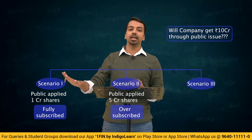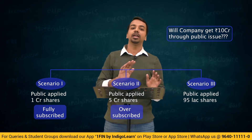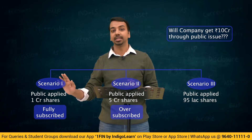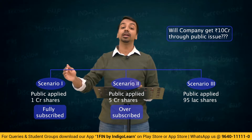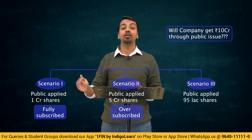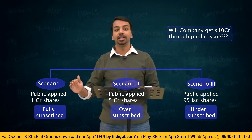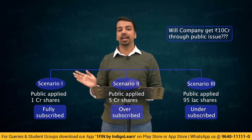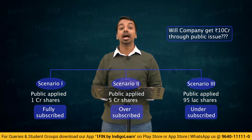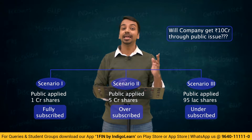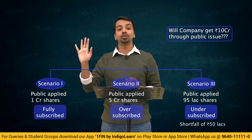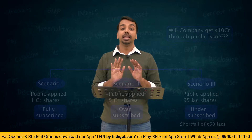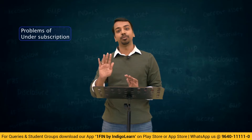The third scenario: instead of applying for 1 crore shares, the public made an application only for 95 lakh shares. This shortfall — getting fewer applications than shares issued — is called undersubscription. The company collected only 9.5 crores (95 lakhs × 10) instead of 10 crores, leaving a shortfall of 50 lakh rupees.